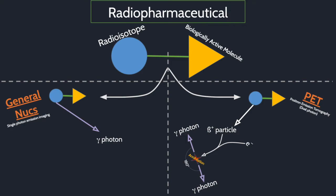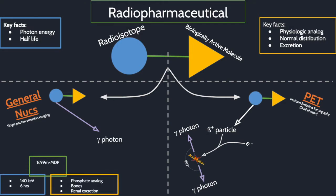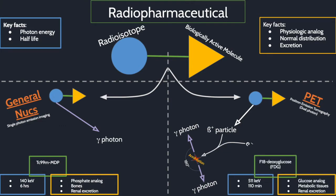For each radiopharmaceutical, you need to memorize a few facts. For the radioisotope portion, you need to know the photon energy it emits and the physical half-life. For the biologically active molecule portion, you need to know what is the physiologic analog, where does it go normally, and how does it get excreted. Learn these over time as you go through the rotation. For each imaging study you read, look up these key facts for each radiopharmaceutical, and you'll slowly be able to memorize them.